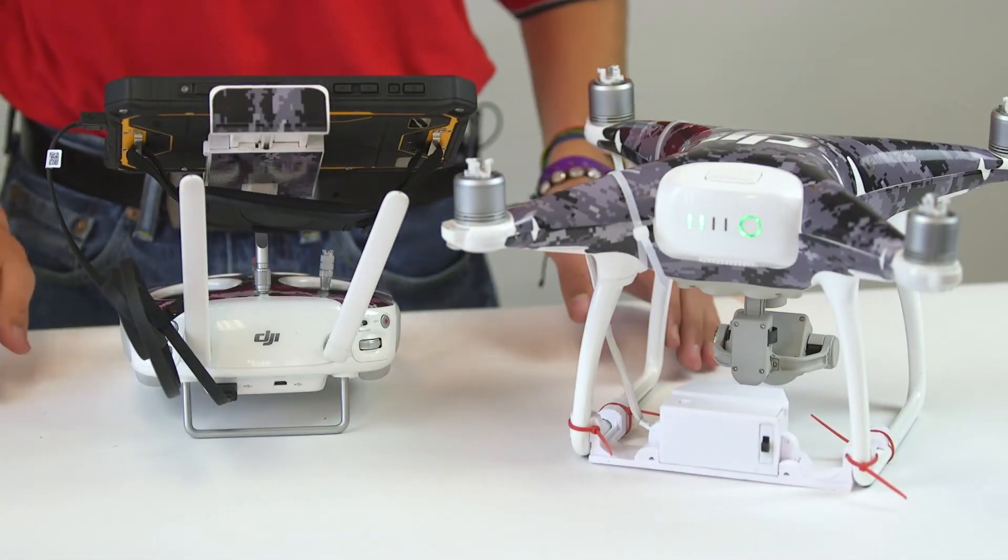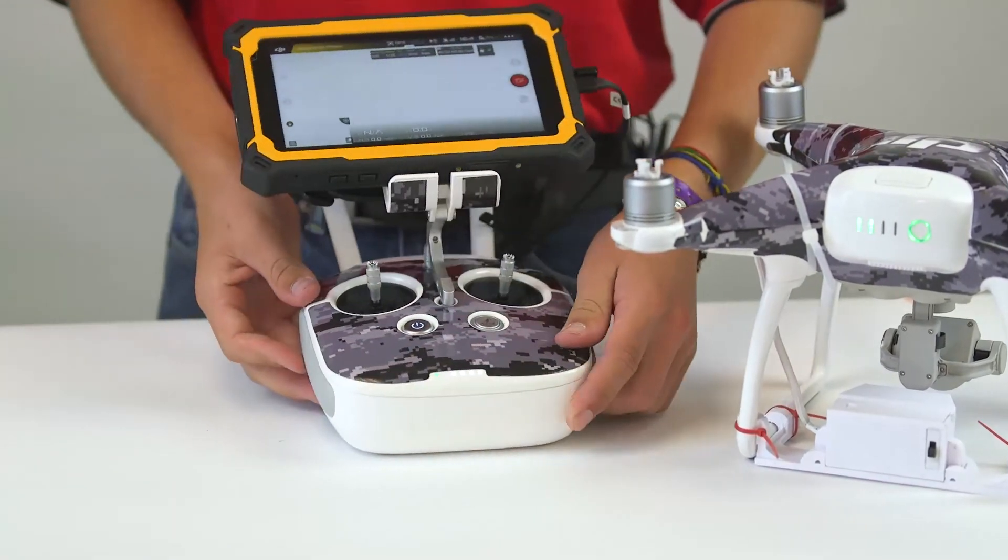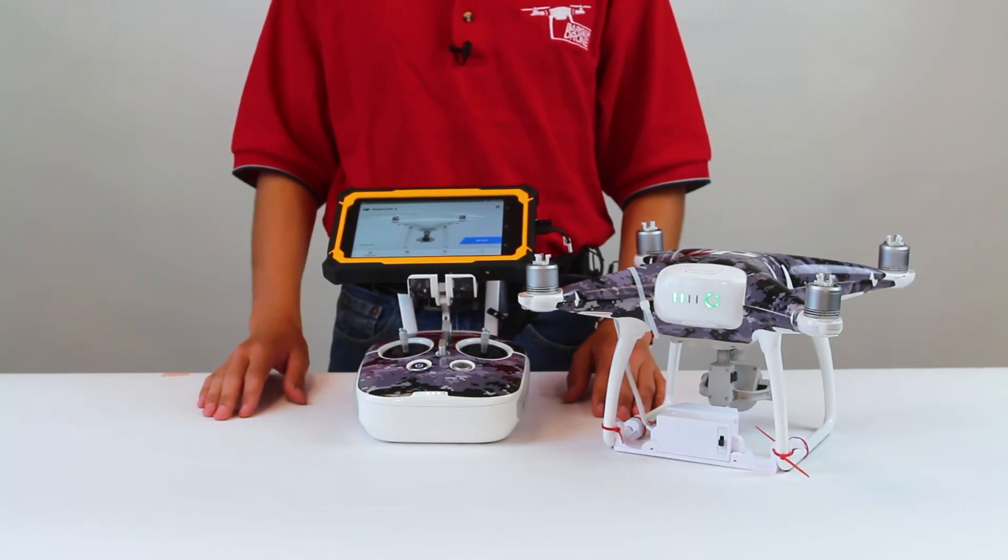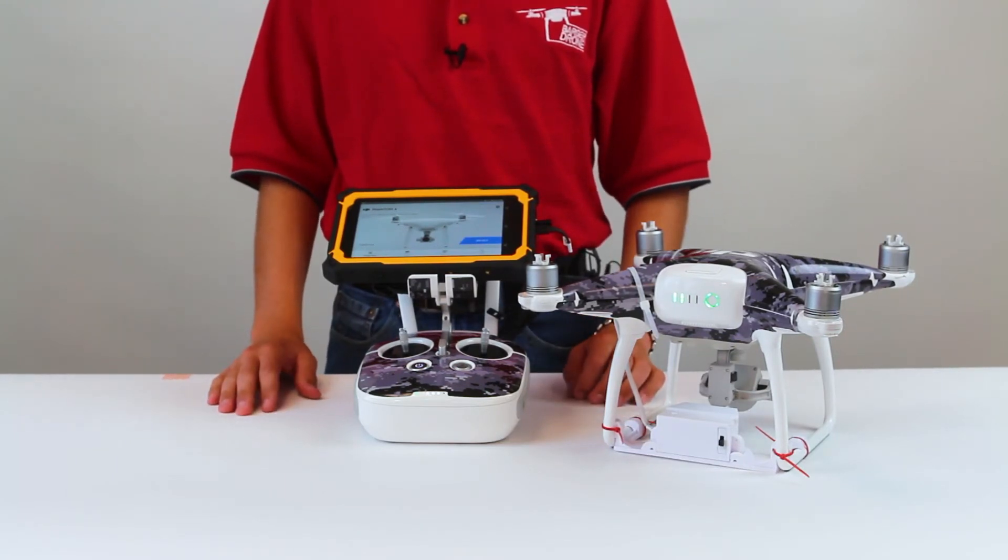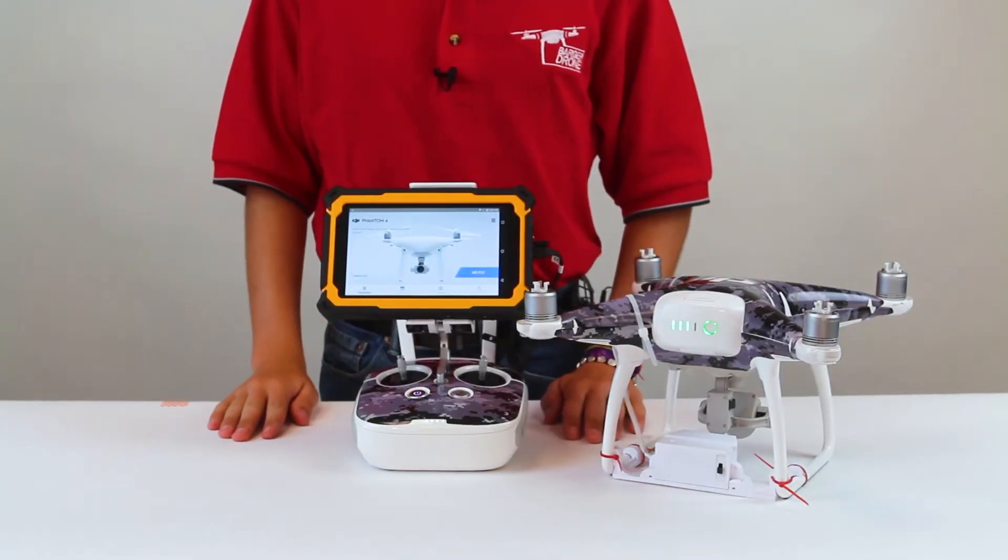Next we need to program a customizable button on the remote control so that we can turn the siren on and off. Turn on the Phantom, your tablet and the remote. Use the usual pre-flight activation sequence recommended by DJI. We are not attaching the propellers for this test.